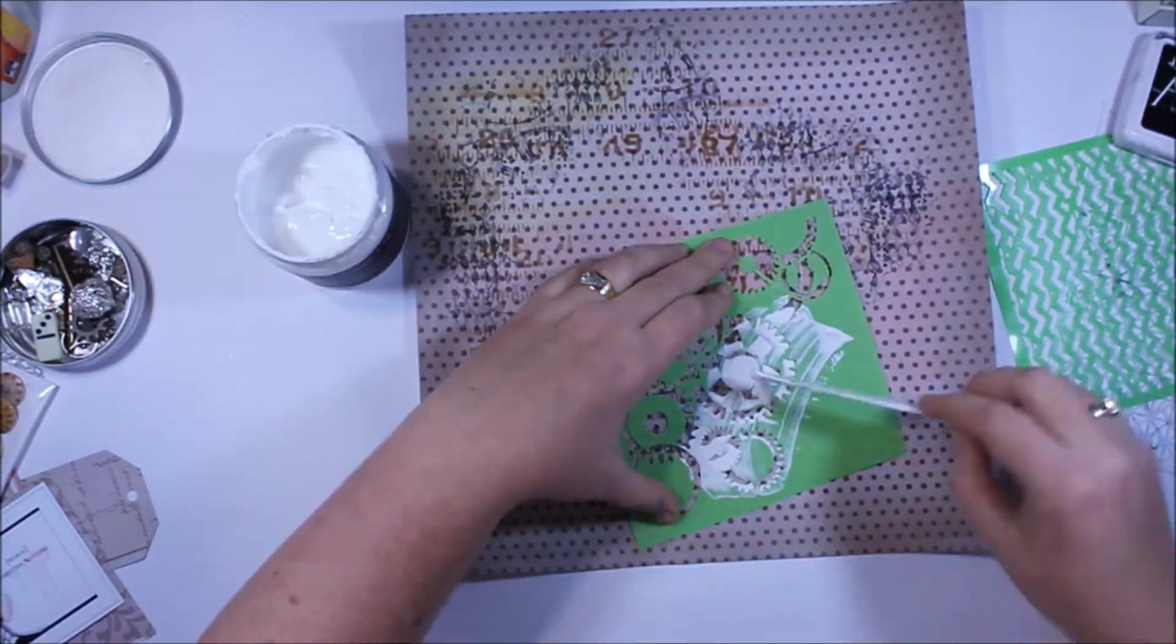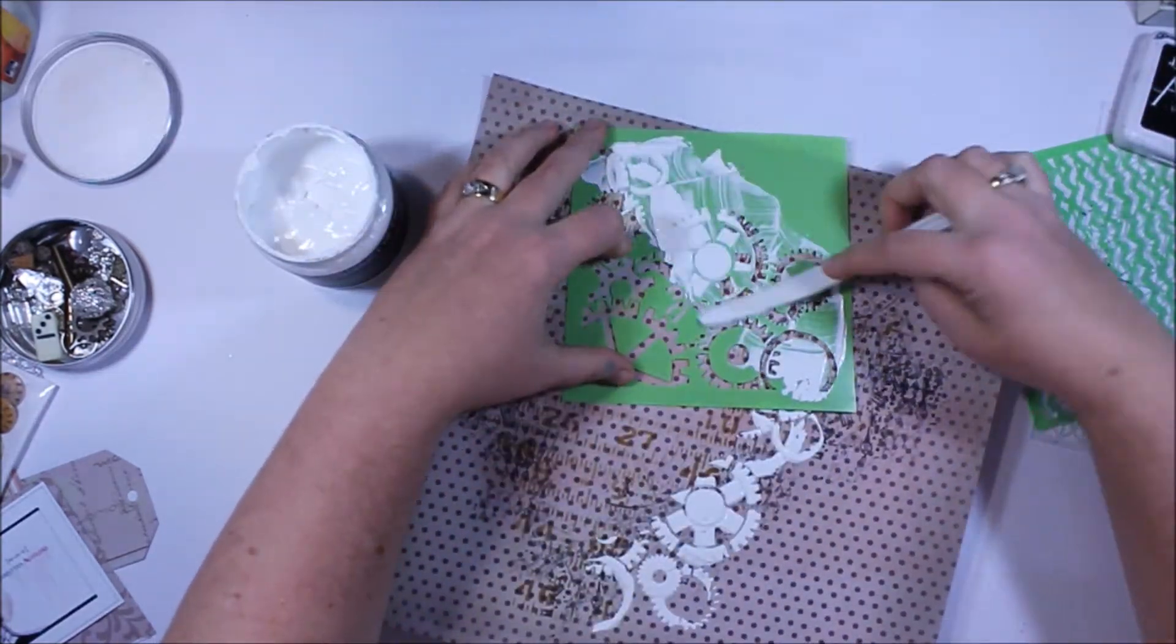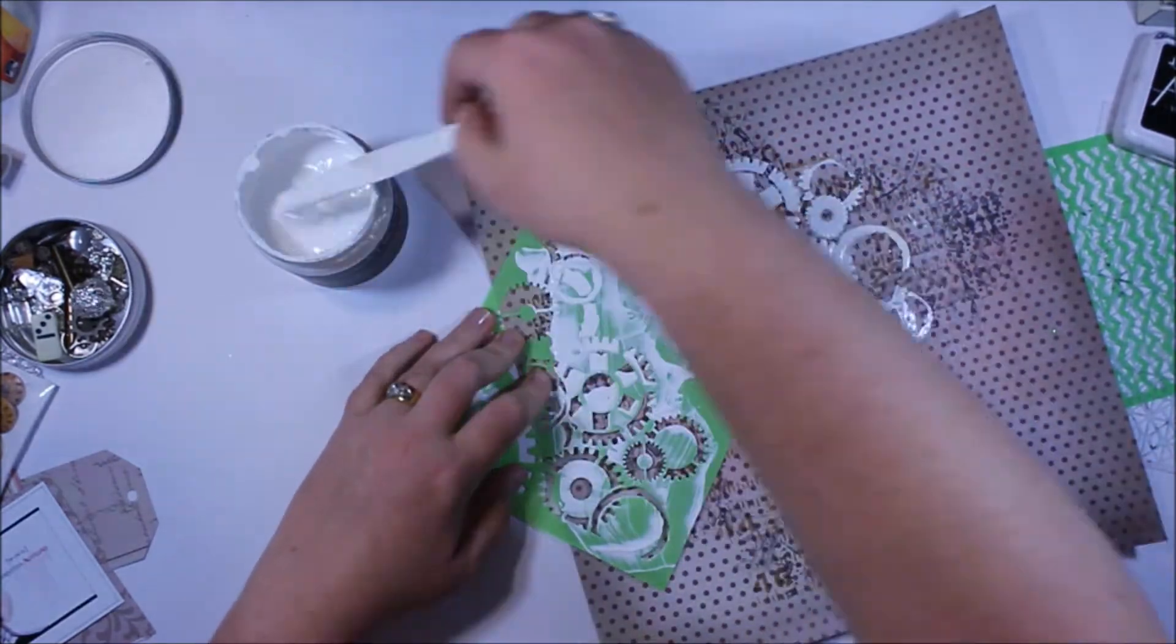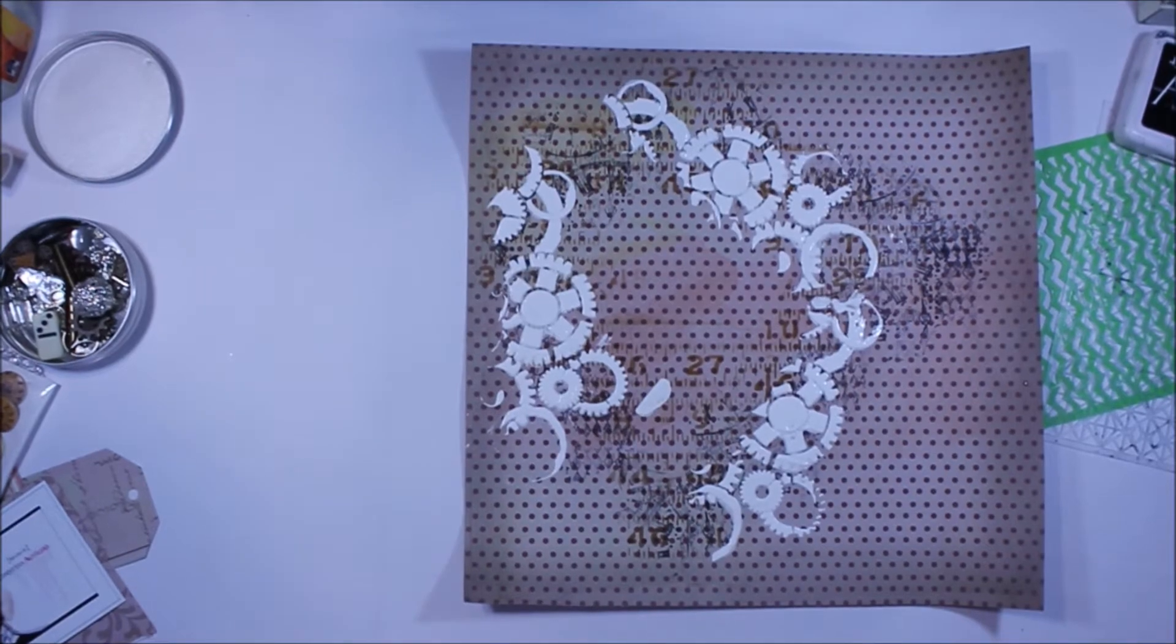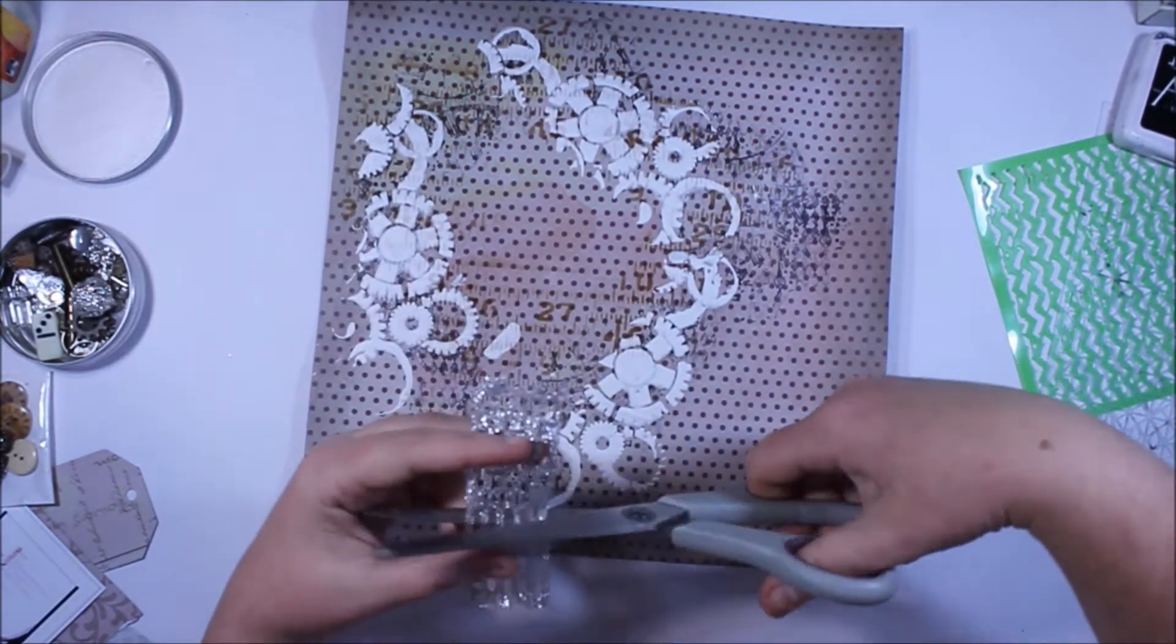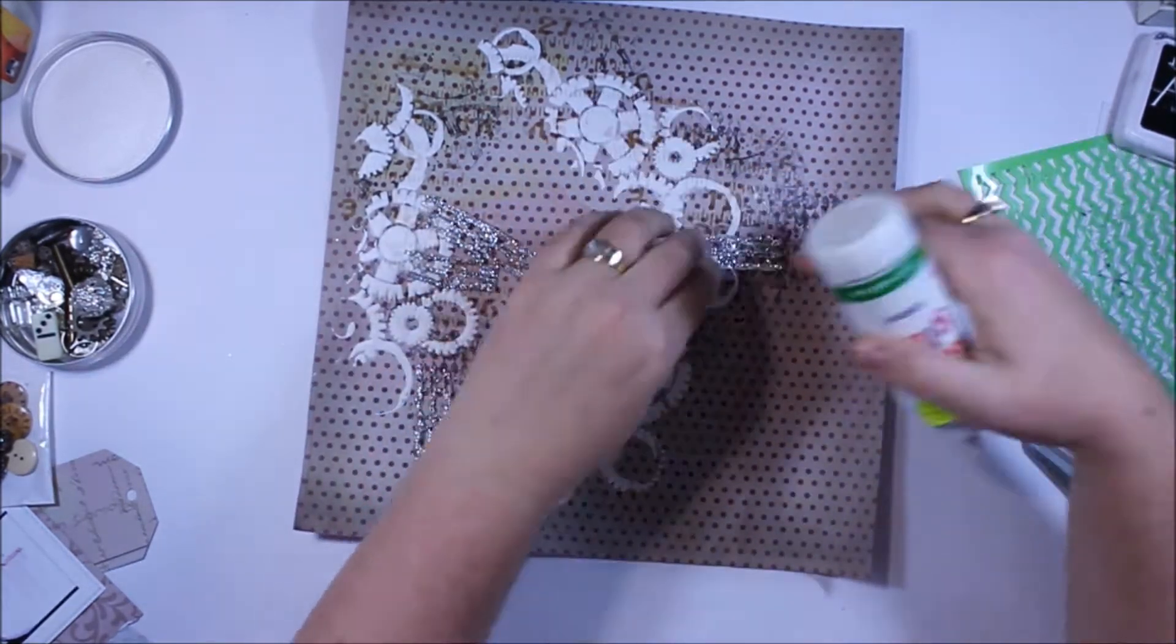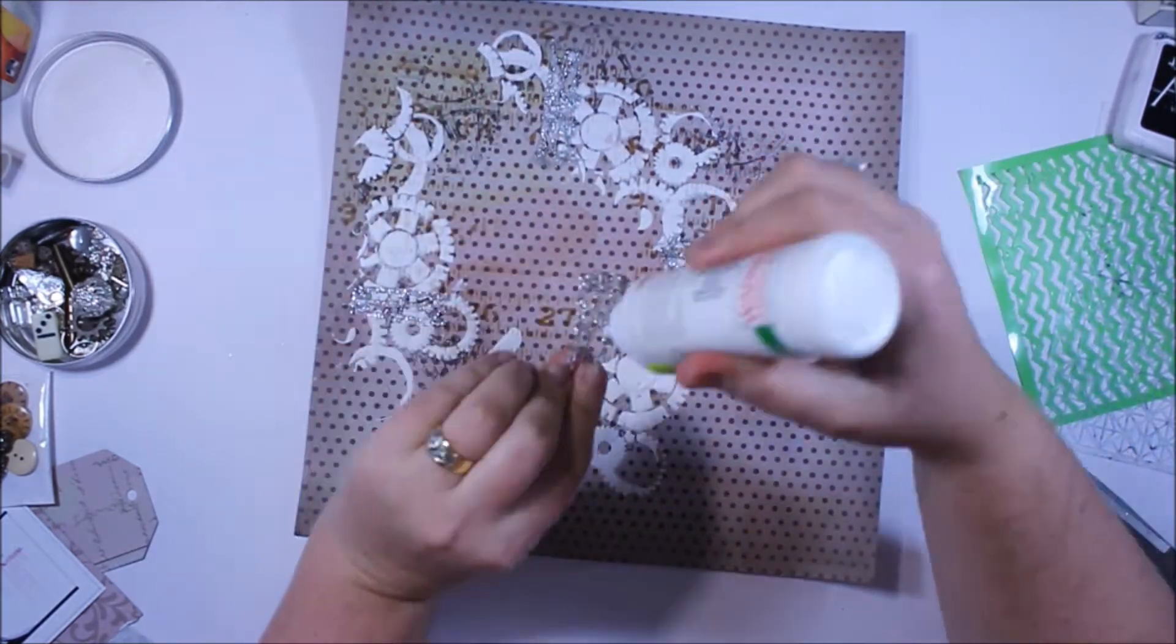So I've dug through my stash and I've found this cog stencil and of course cogs are very much part of steampunk. So I'm going to use that around the page just to add depth and interest. First, I'm using the Colour Blast white gesso, which if you let it stay open, so if you leave the lid off, it won't dry out. It'll actually sort of thicken up and you can use it like a paste.